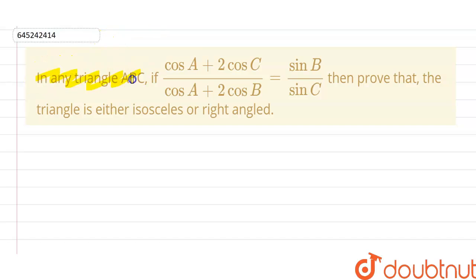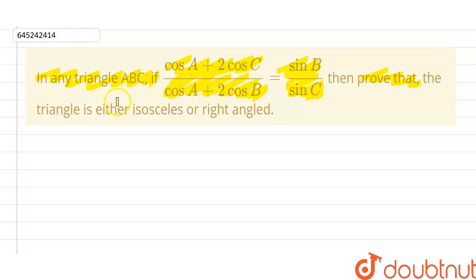The given question is: in any triangle ABC, if (cosA + 2cosC) / (cosA + 2cosB) equals sinB / sinC, then we have to prove that the triangle is either isosceles or a right-angled triangle.